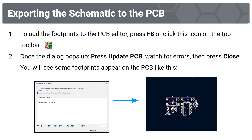To export the schematic to the PCB, press F8 or click the icon on the top toolbar. Once the dialog pops up, press Update PCB, watch for any errors, then press Close. You'll see the footprints appear on the PCB — drag them somewhere on the PCB editor and place them down.